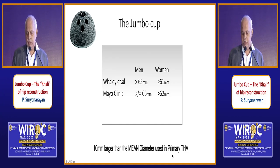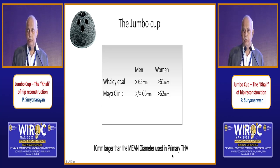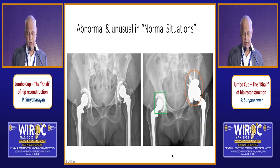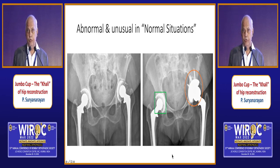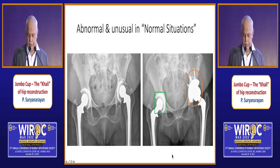The cup must be at least 10 to 12 mm larger than the normal side for that individual. In India, with an average size of 50, even 60 is probably a jumbo cup. To use such a cup in normal situations is abnormal, but in revision or bone loss situations it makes a lot of sense. Key considerations include column erosions, superior or medial migration, and assessing feasibility of overcoming defects with the cup alone.